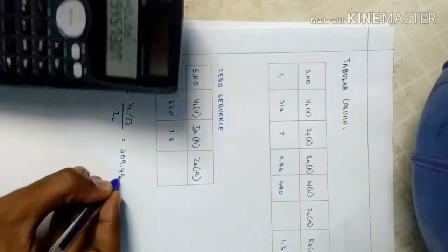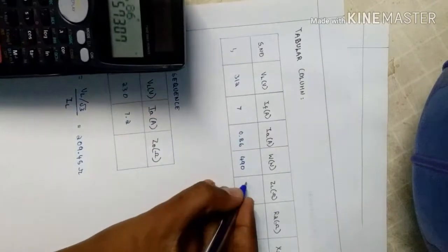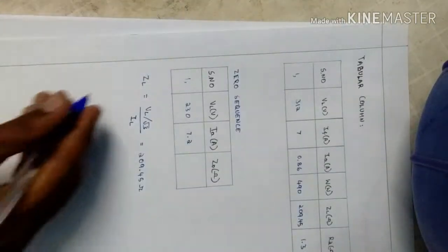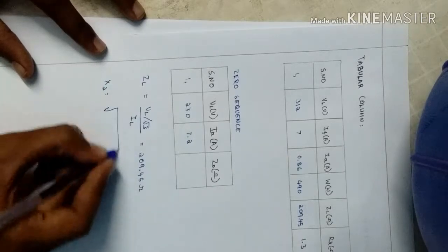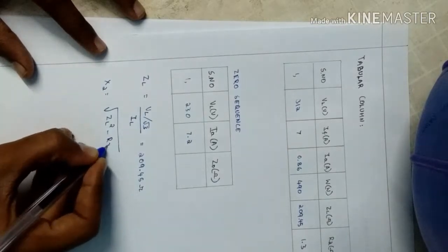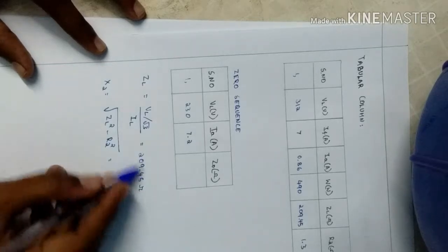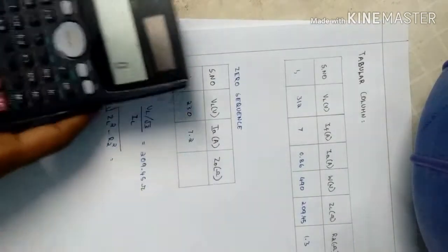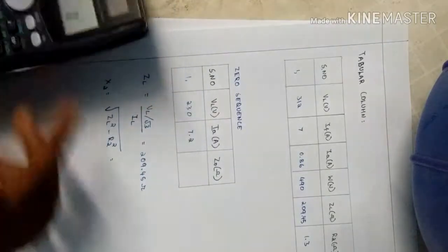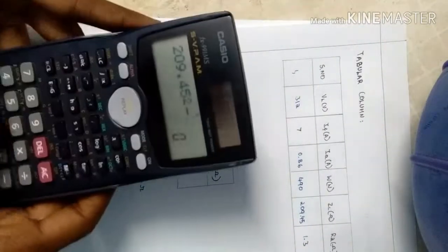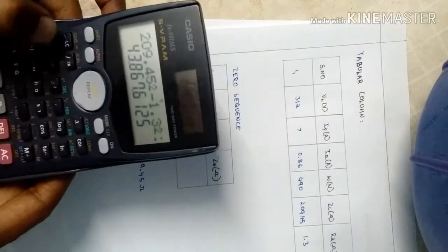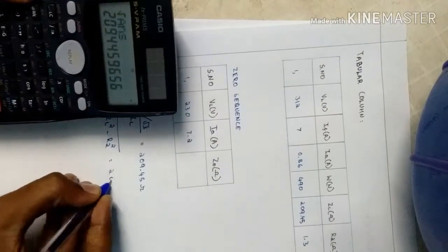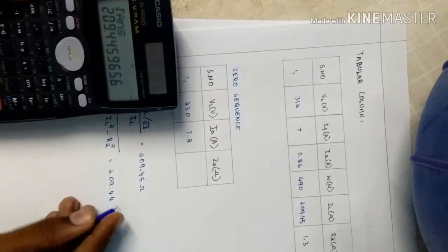For X2, the formula will be X2 is equal to square root of ZL square minus R2 square. Taking ZL value that is 209.45 square minus R2 that is 1.3, 1.3 square, root of answer, that is 209.44 ohm.